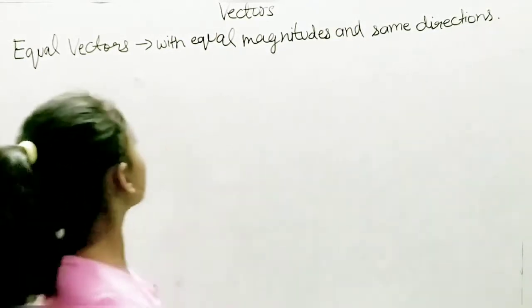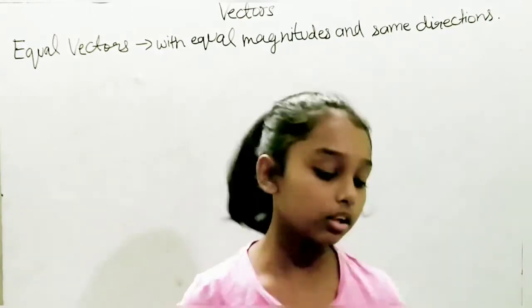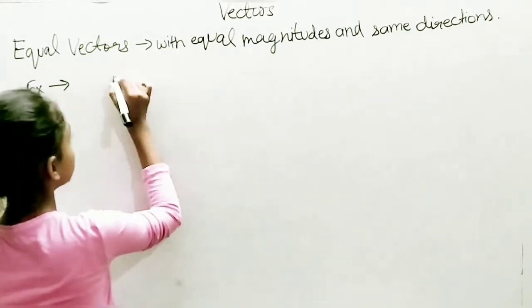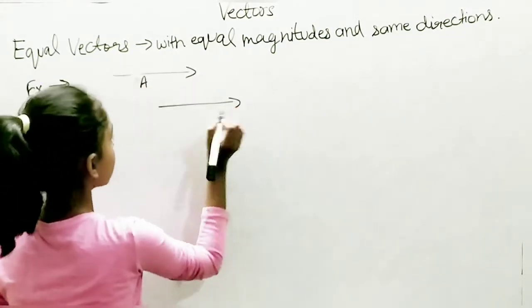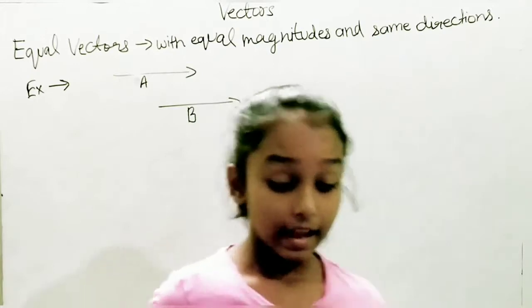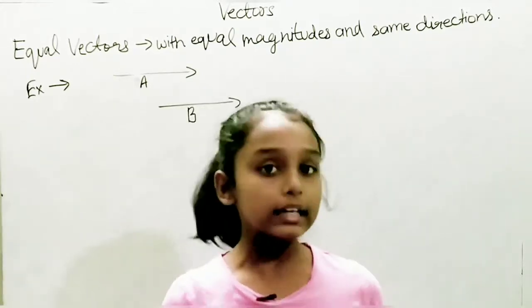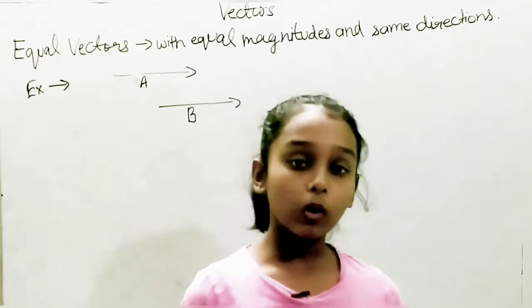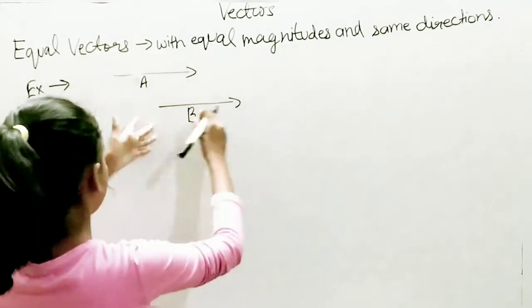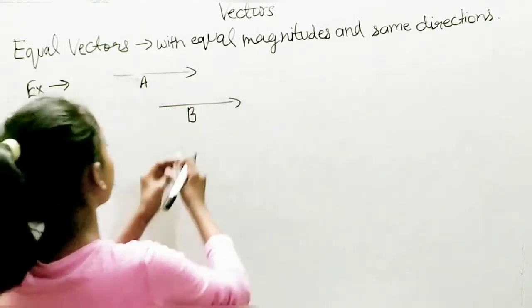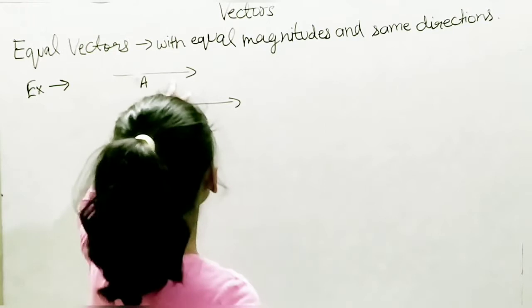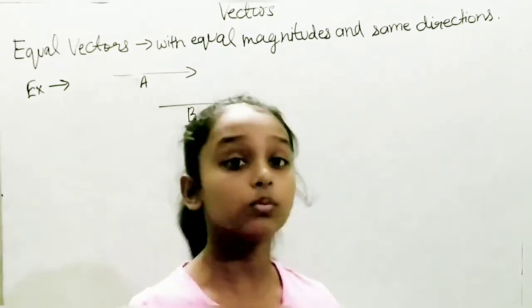Now I am going to give an example. Let's take the first vector as A and the second one as B. I will also tell you that they are equal regardless of the position of their initial point. That means it doesn't matter where the vectors are positioned — what matters is that they go in the same direction and both have the same magnitude.